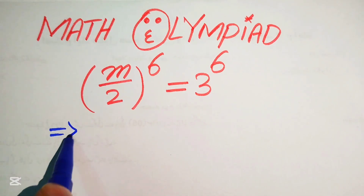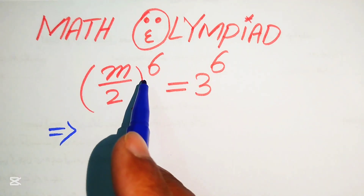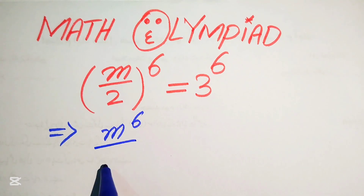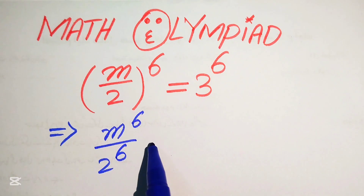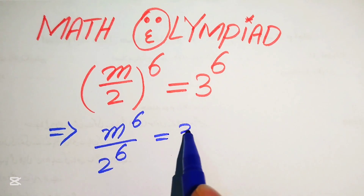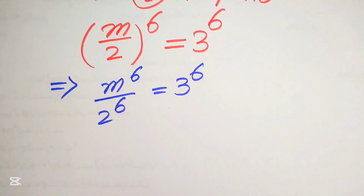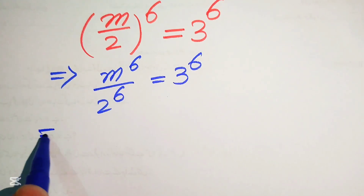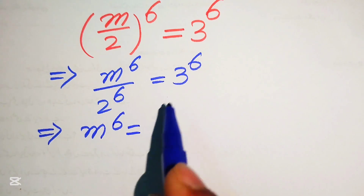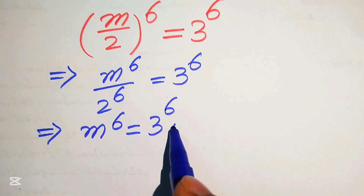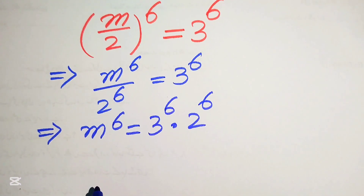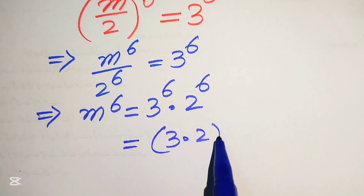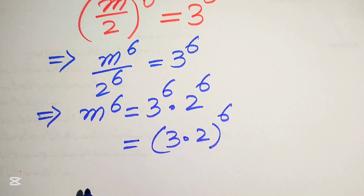First we break this exponent and add the 6 separately on both terms. It will be written as m to the power of 6 divided by 2 to the power of 6, equals to 3 to the power of 6. When we move 2 to the power of 6 to the right hand side, it is multiplied by 3 to the power of 6, giving us 3 to the power of 6 multiplied by 2 to the power of 6. Taking the common exponent, this is 3 times 2 to the power of 6.